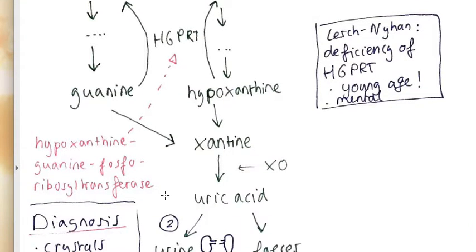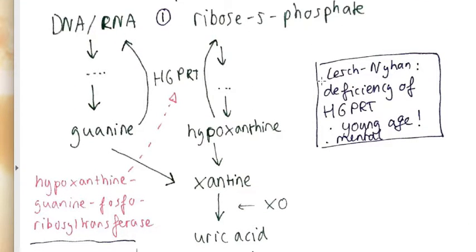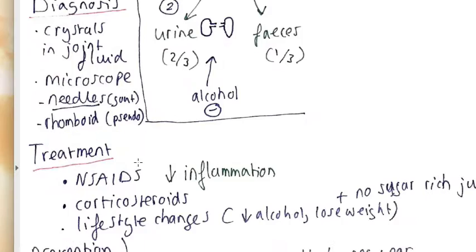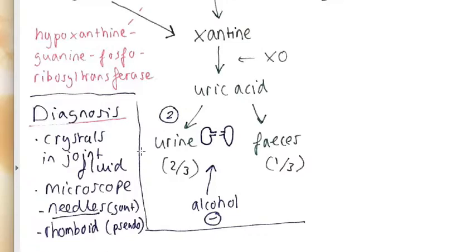And that is called Lesch-Nyhan, and we also see mental problems with these children or adolescents. Think about it when you see gout-like symptoms at a young age.